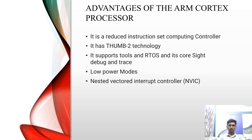Moving on to the advantages of ARM Cortex processor. It is a reduced instruction set computing controller. It has Thumb-2 technology. It supports tools and RTOS and its core side debug and trace. It even supports low power modes. It is used in nested vectored interrupt controller, NVIC.